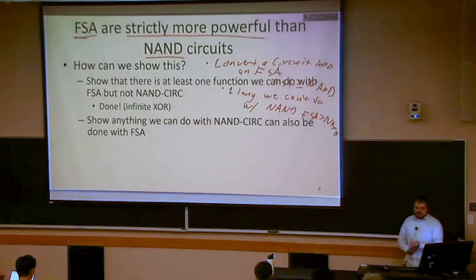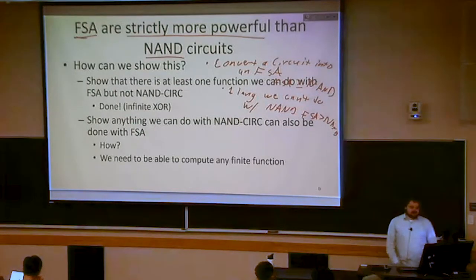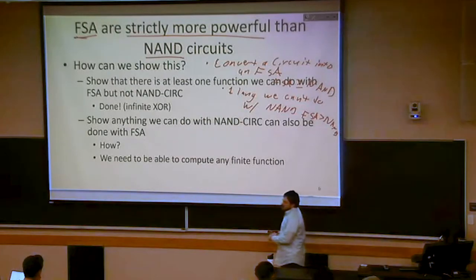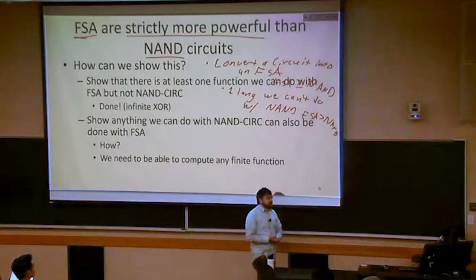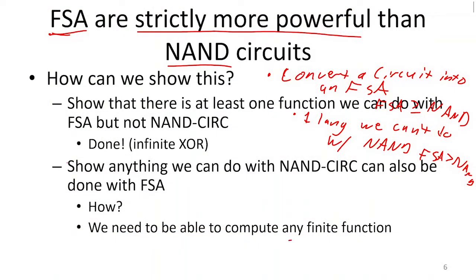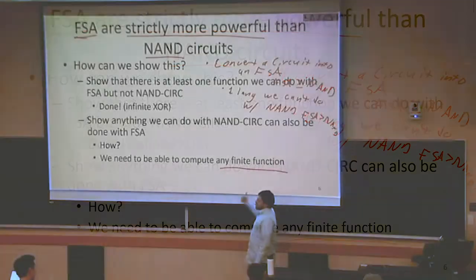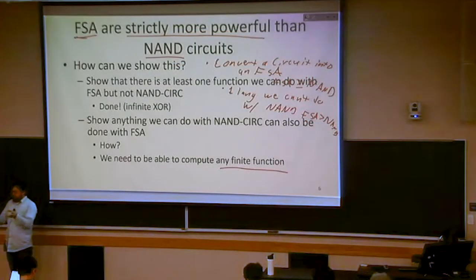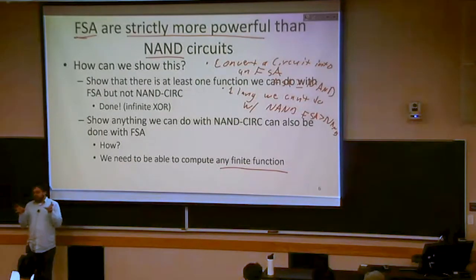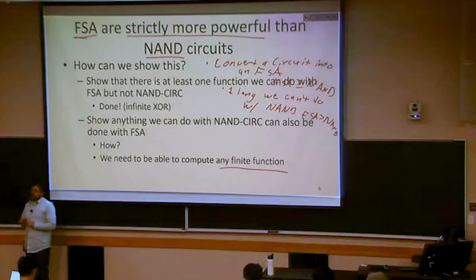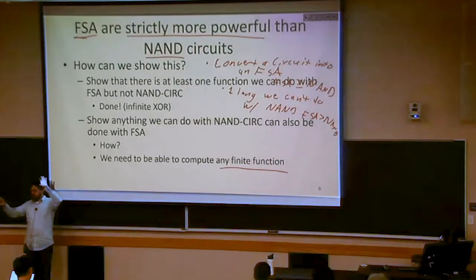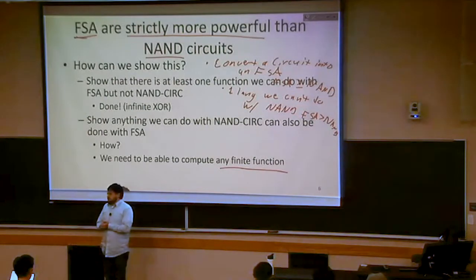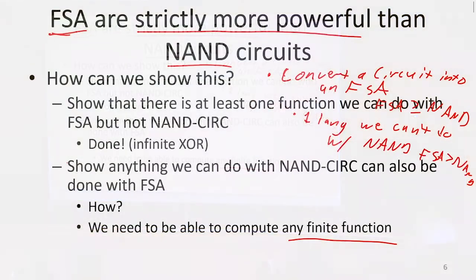Now we're going to show that anything we can do with a NAND circuit, we can also do with finite state automata. I'm not going to directly show how to convert any circuit into a finite state automaton. Instead, since we know NAND circuits can compute any finite function, if I can show that finite state automata can also compute any finite function, then that means I can do anything a circuit could do. Two models of computing are called incomparable if neither is strictly more powerful than the other — but we won't encounter incomparable models this semester.